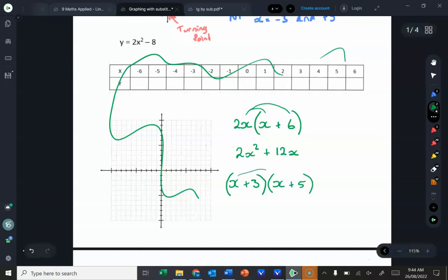Remember it's then that times that, then that times that. You switch to the 3, that times that, then that times that. So it's x times x makes x squared, x times 5 makes 5x, 3 times x makes 3x, and 3 times 5 makes 15.